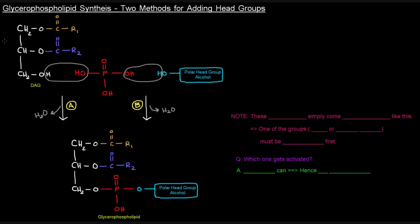The issue is that these three components cannot simply come together like this. One of the groups — either the diacylglycerol or the head group — must be activated first. The question is which one actually needs to be activated: the diacylglycerol or the polar head group alcohol? The answer is that either can be activated.